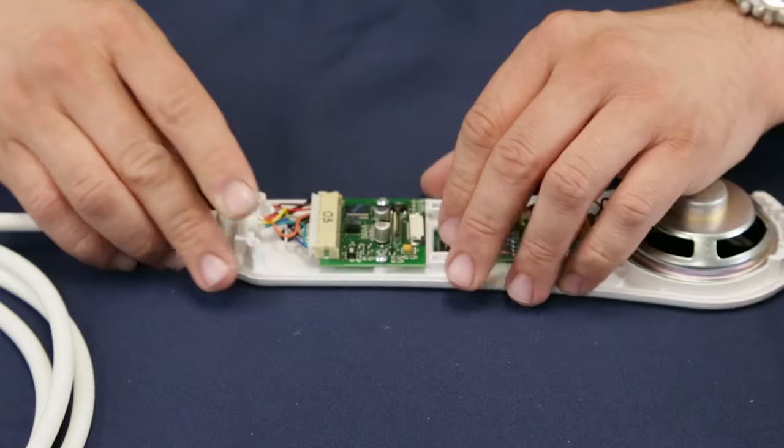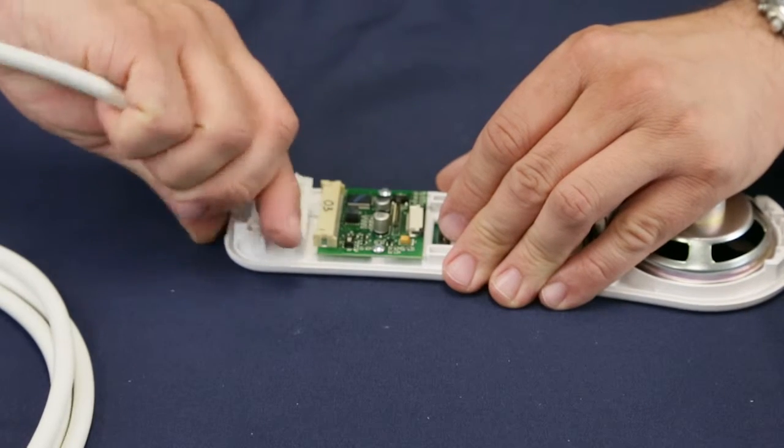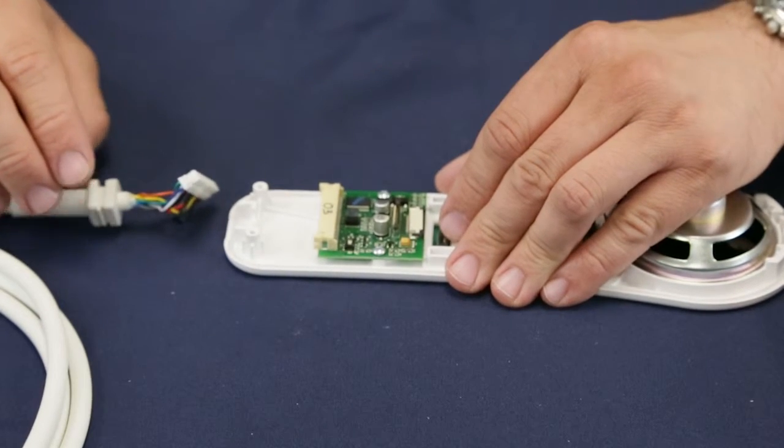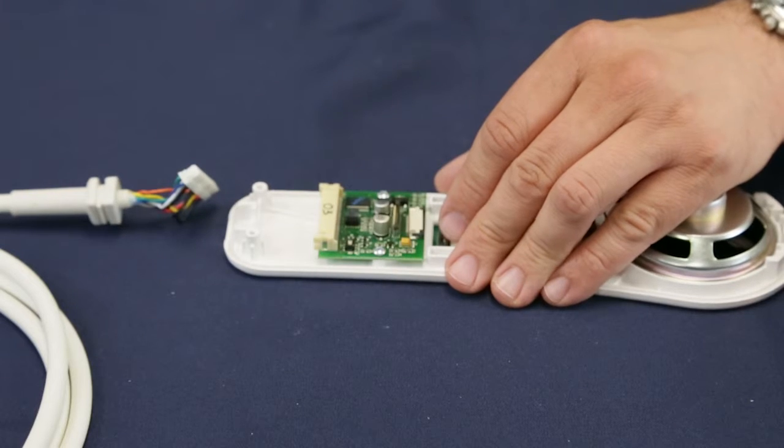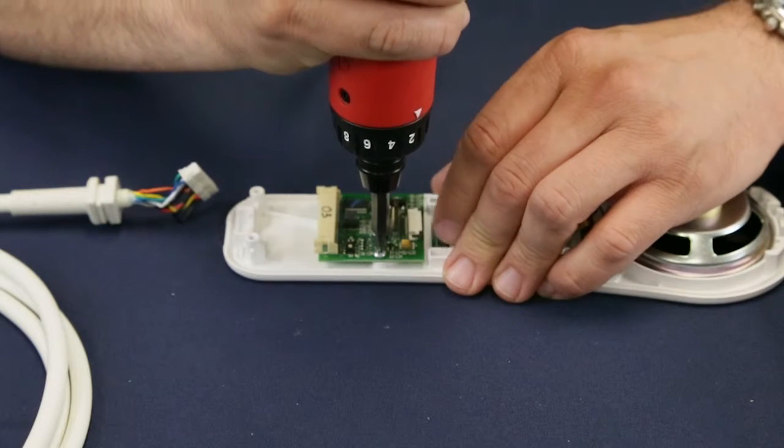Disconnect the pillow speaker cable from the entertainment circuit board. Once the board is free of all the wire connections, remove the screws that attach the board to the case.